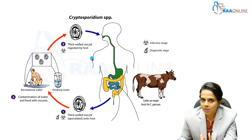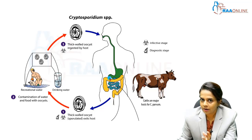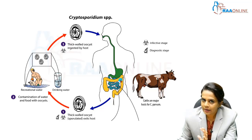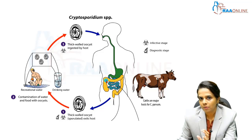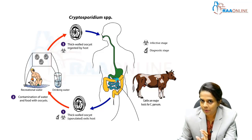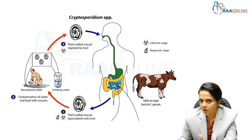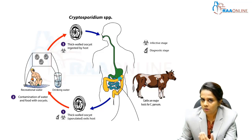Once ingested, excystation occurs in the small intestine, releasing the sporozoites. These sporozoites invade the brush border epithelium of the small intestine, then invade further and form the parasitophorous vacuole.